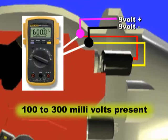A second test to perform on a PCS is to apply power and ground using a 9 volt square battery and measure the voltage across the two terminals. You should see from 100 to 300 millivolts present. The 9 volt battery is too small to damage the PCS so long as you don't leave it connected too long.